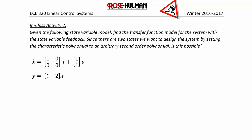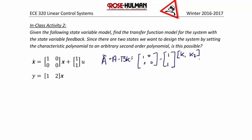The first thing we're going to do is find A-tilde. A-tilde is equal to A minus BK, which equals the matrix [1, 0; 0, 0] minus [1; 1] times [K1, K2], which equals [1 minus K1, negative K2; negative K1, negative K2].